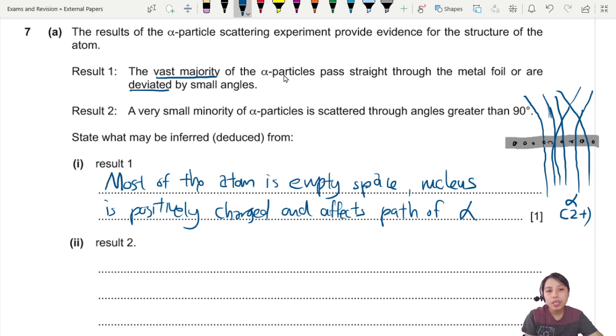And observation two. A very small minority of particles scatter through angles greater than 90 degrees. You know what that means? Means some alpha particle go in, suddenly go backwards. These are all the purple color ones, more than 90 degrees scattering. Means you probably hit a nucleus head-on collision and bounce back.